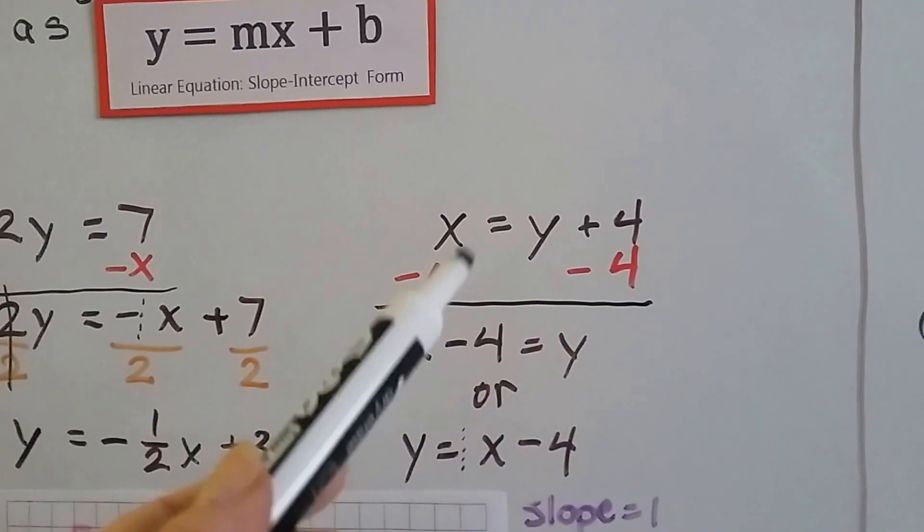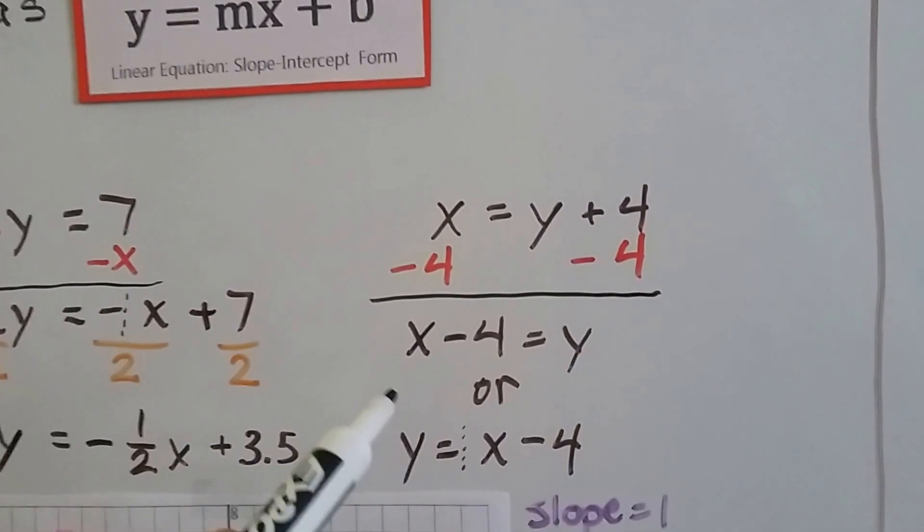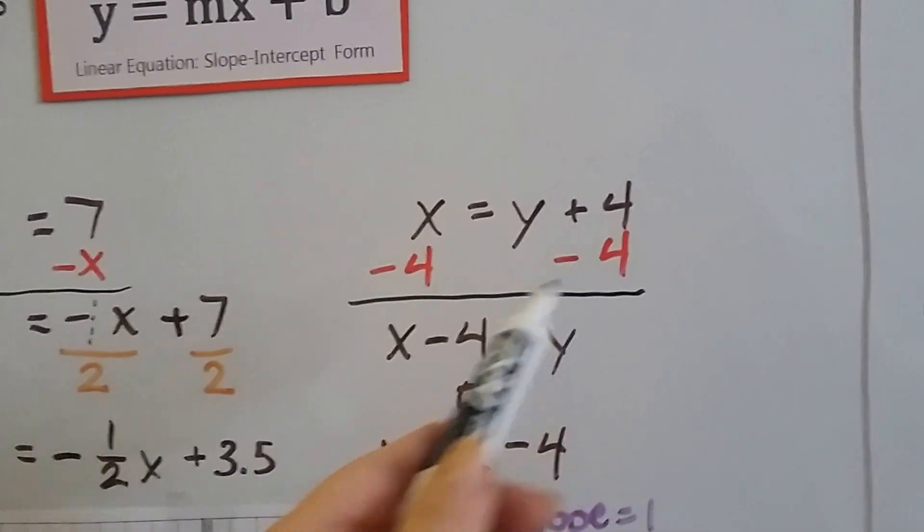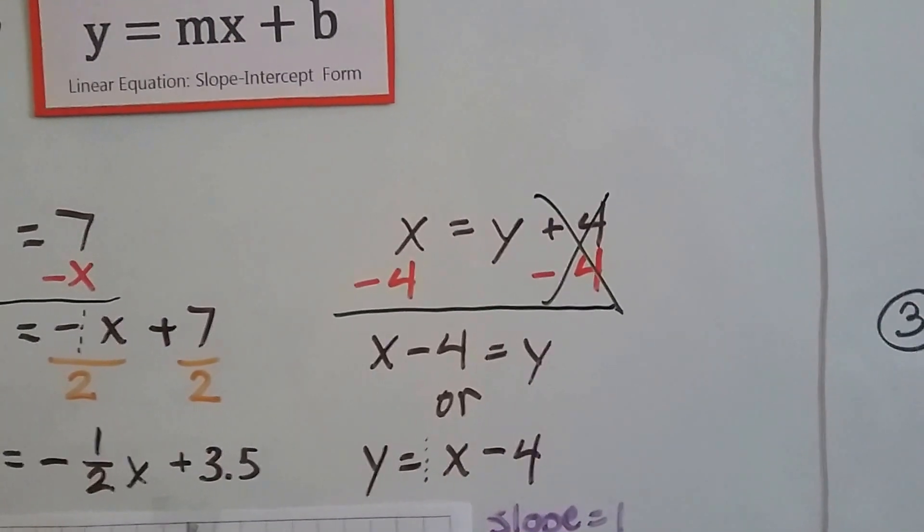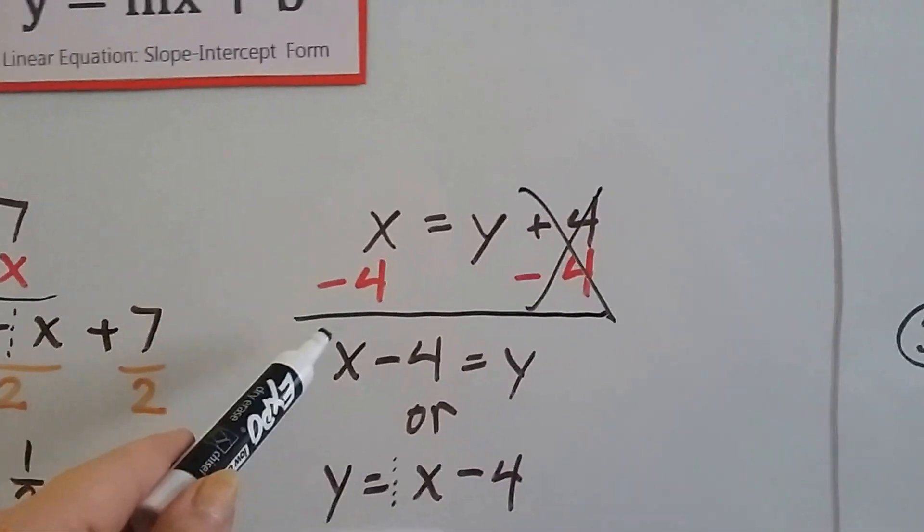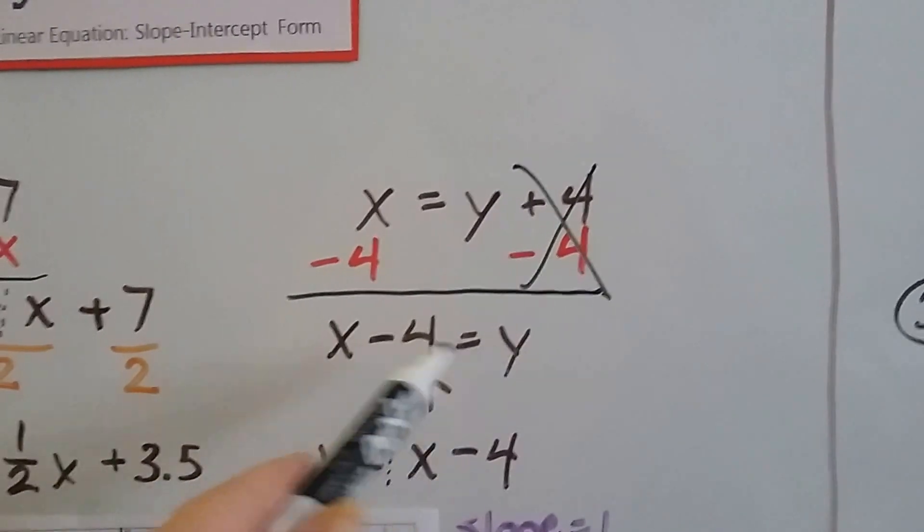This one was x equals y plus 4. So we're going to take away the 4 from each side to get this y by itself. That creates a zero pair here and eliminates it. And we get x minus 4 equals y on this side.